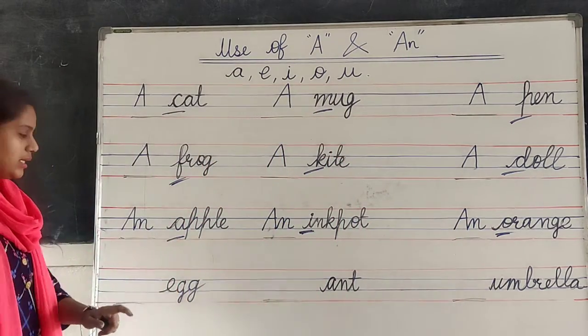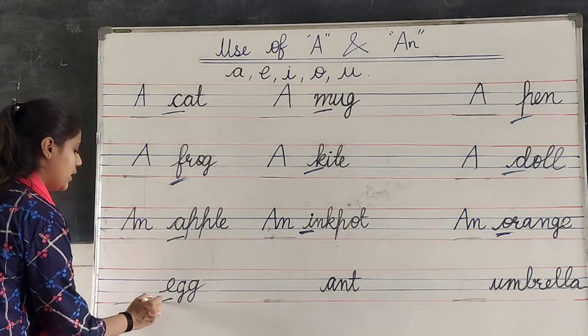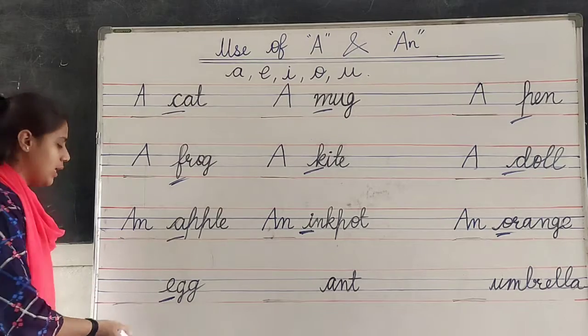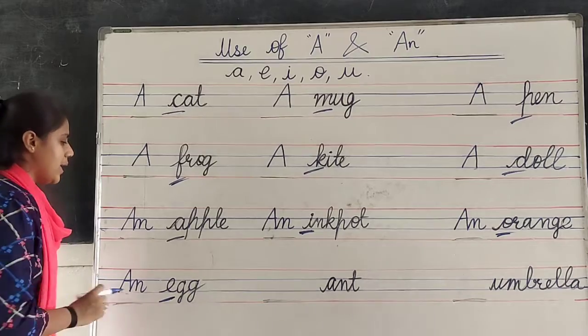Next, egg. E, double G. Egg. First letter is vowel. E is a vowel. Then we have to write A, N. An.